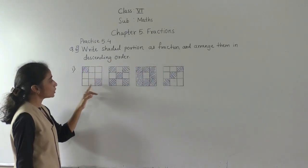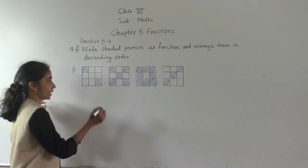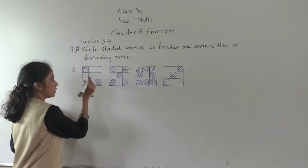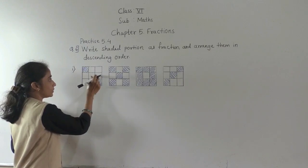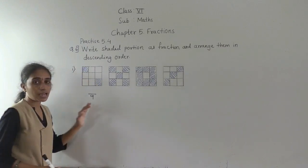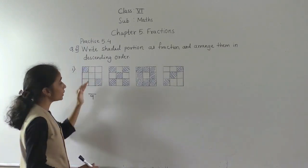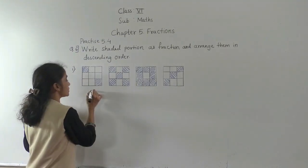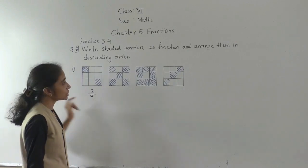Now see, how many total parts are here? 9 parts are total parts. See: 1, 2, 3, 4, 5, 6, 7, 8, 9. 9 parts are total parts and from that how many parts are shaded? 2 parts are shaded.